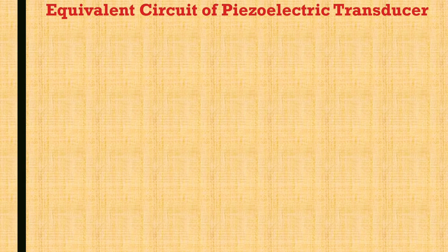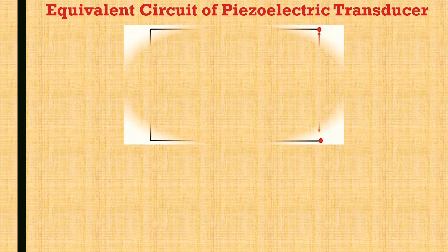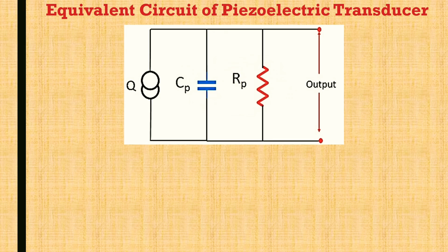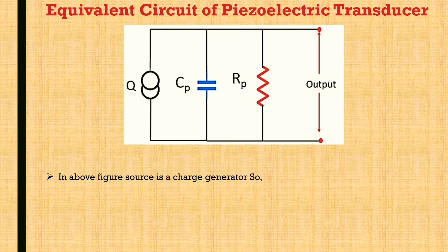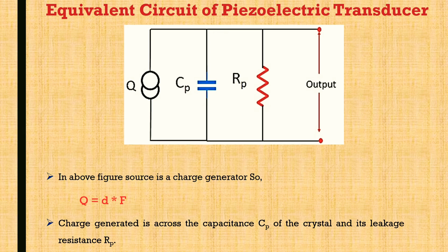Now let us see the equivalent circuit of the piezoelectric transducer. In the equivalent circuit figure, there is a charge generator q, a capacitor Cp, and a resistance Rp. The source is a charge generator where q equals d multiplied by f. The charge generated appears across the capacitance Cp of the crystal and its leakage resistance Rp.